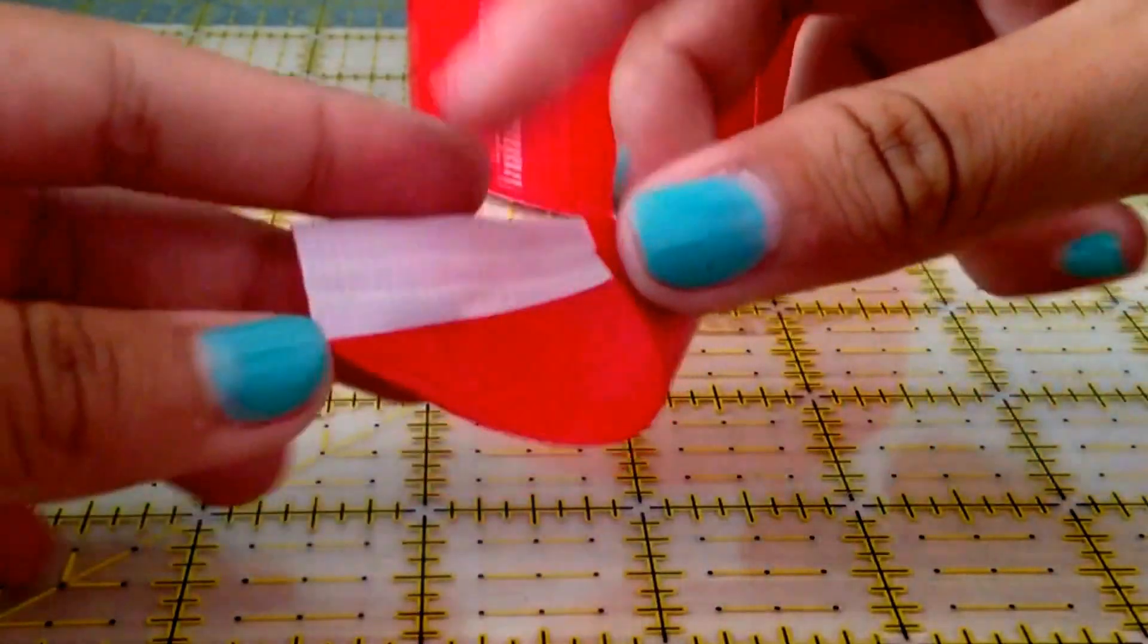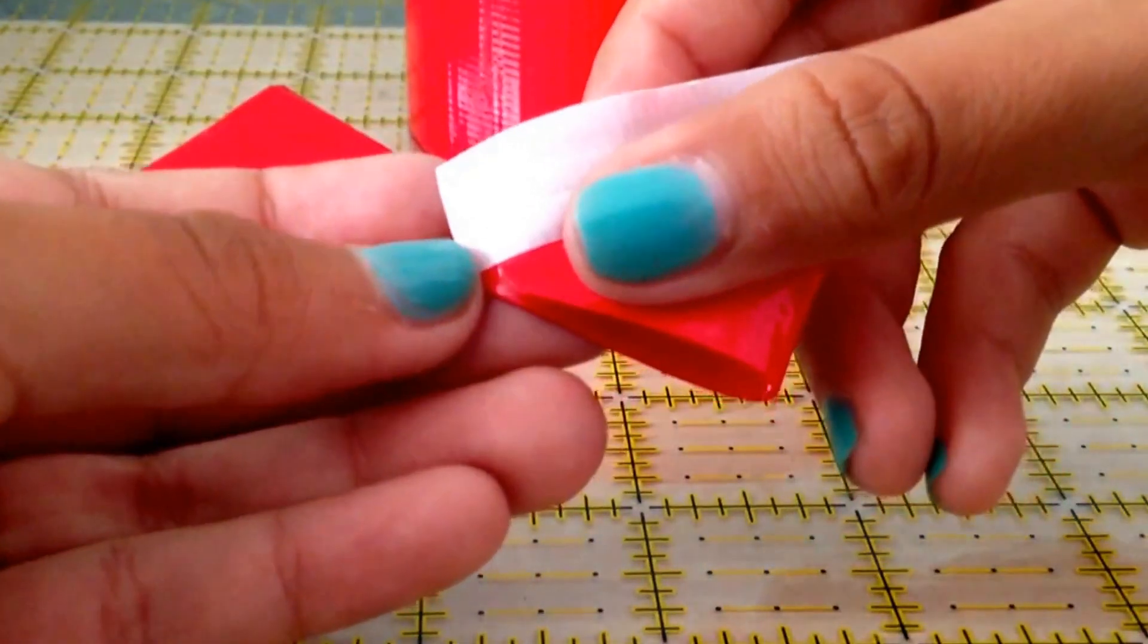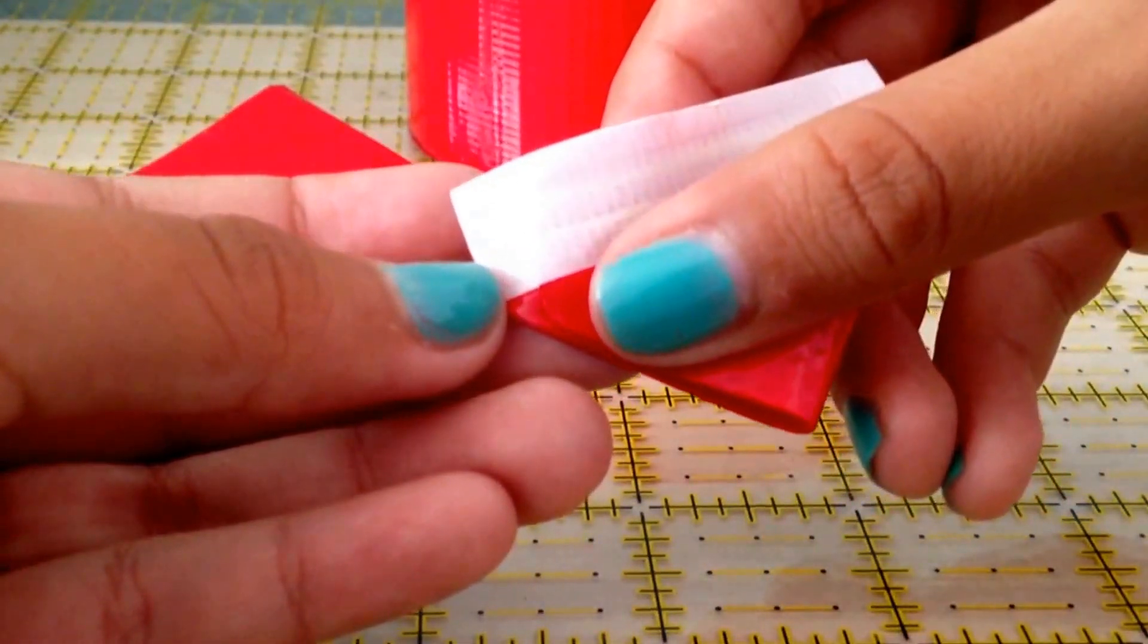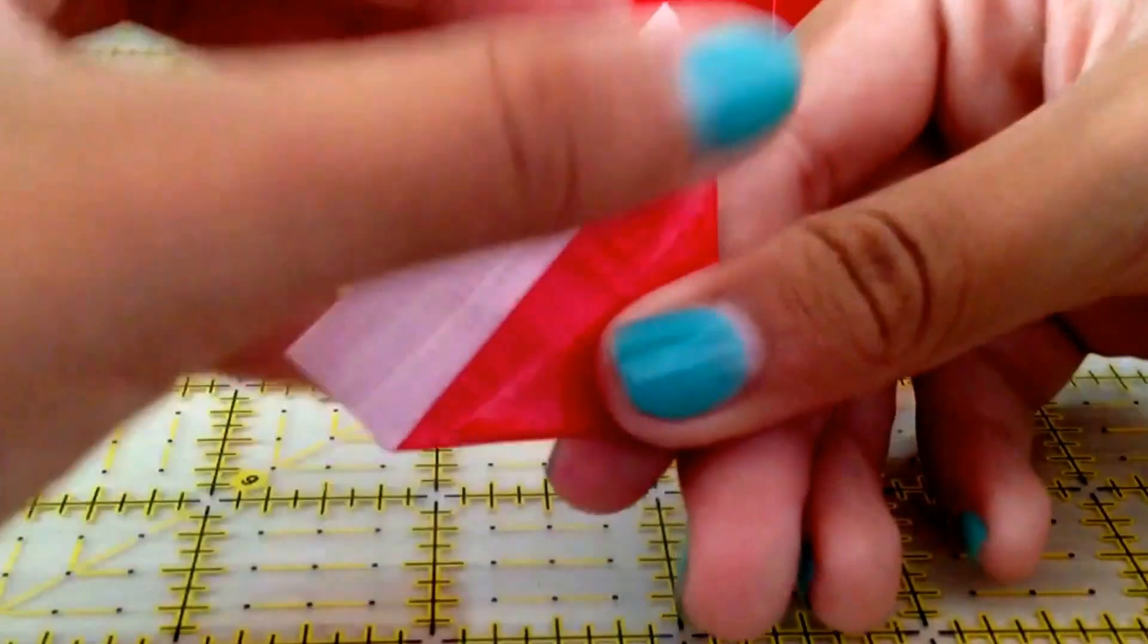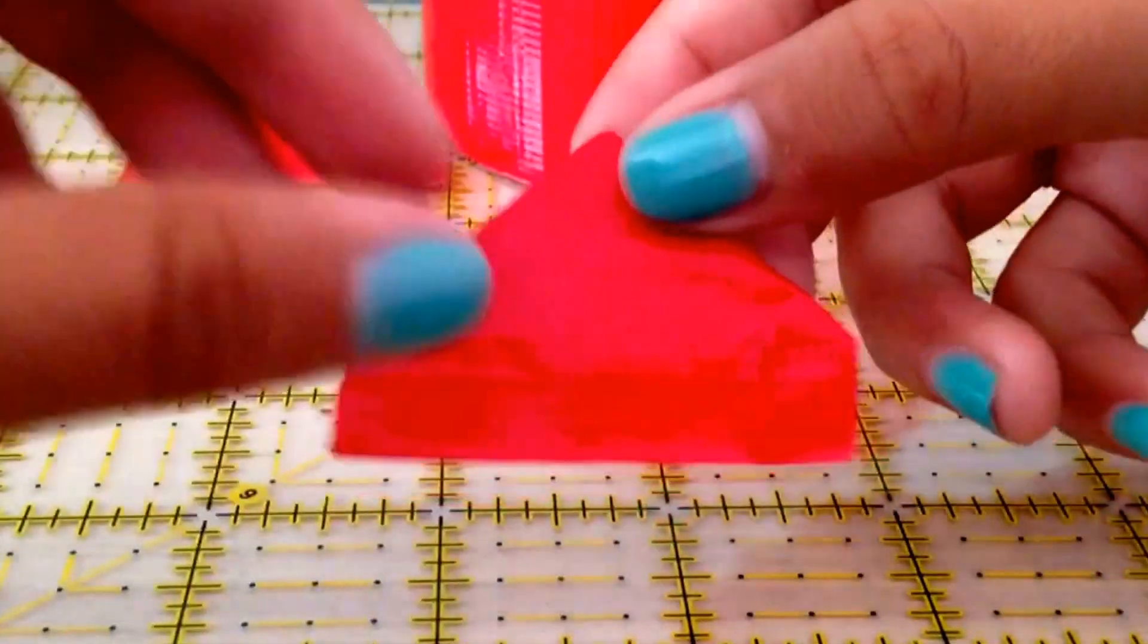Now, take one side and fold it over to the red like that, and then crease it. So, now you should have another triangle.